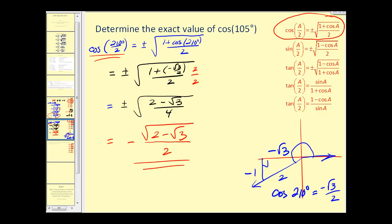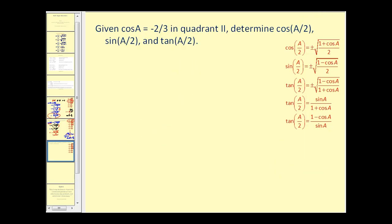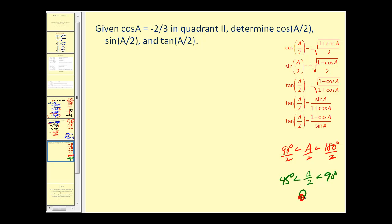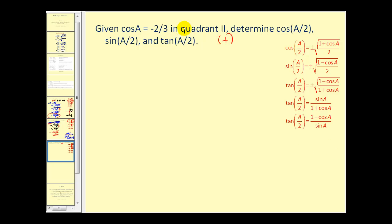We have one more question. Here we're given cosine A equals negative two thirds in the second quadrant. We want to determine cosine A over two, sine of A over two, and tangent A over two. First, angle A is in the second quadrant, which means it's between 90 degrees and 180 degrees. So A over two would be between 45 degrees and 90 degrees, which means it's in quadrant one. That tells us all of these function values will be positive. Let's sketch this angle in standard position. This reference angle has a cosine value of negative two thirds. Using the Pythagorean theorem, we can determine the third side of this reference triangle, and it will equal the square root of five.